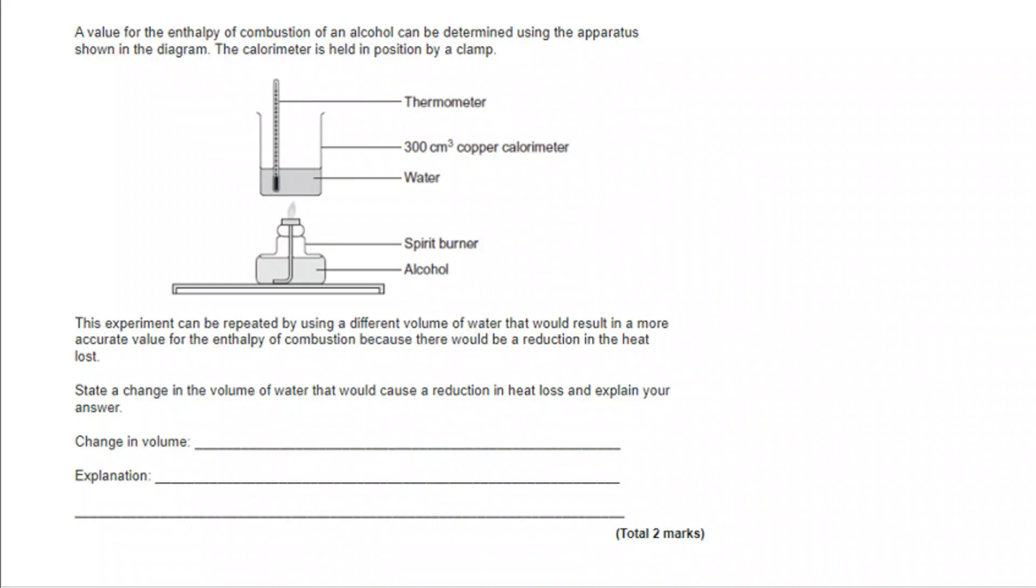And let's take a look. A value for the enthalpy of combustion of an alcohol can be determined by using the apparatus shown. The calorimeter is held in position by a clamp. The experiment can be repeated using a different volume of water that would result in a more accurate value for the enthalpy of combustion because there would be a reduction in the amount of heat lost.